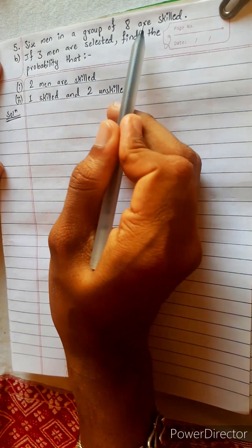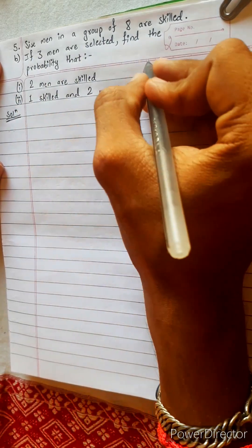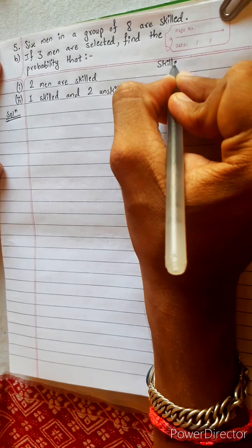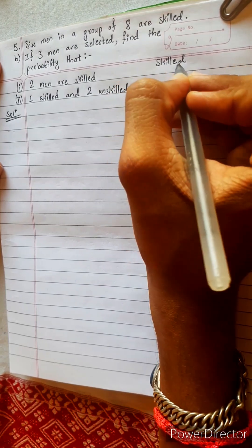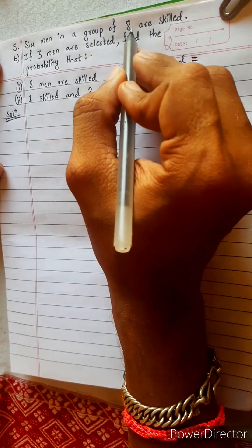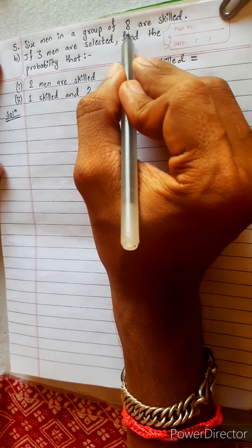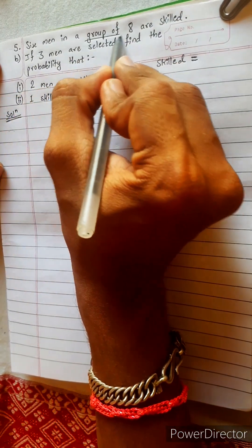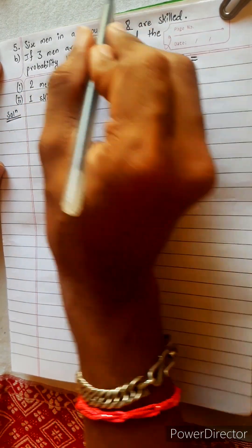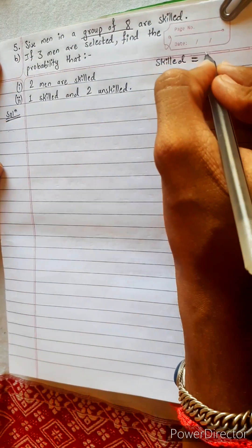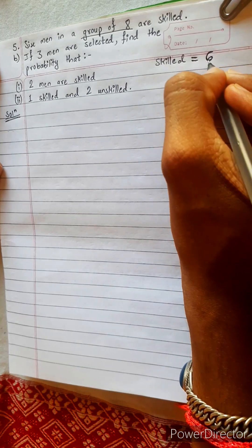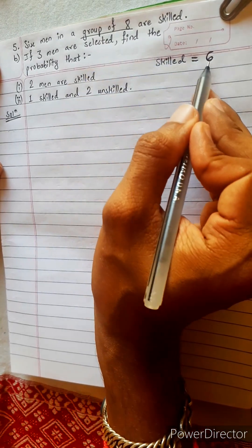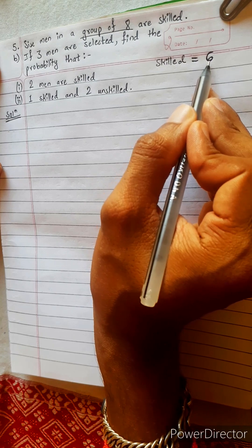Six men in a group of eight are skilled. Skill is known as eight. Eight are skilled — six men in a group of eight. This group of eight is a phrase. Six men are known as eight; skill is six. Six are skilled.